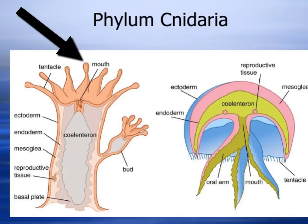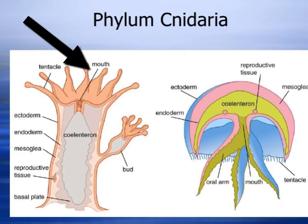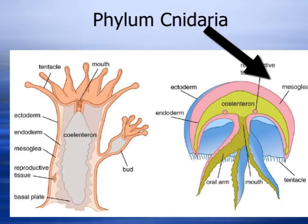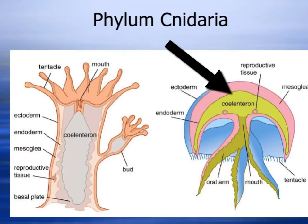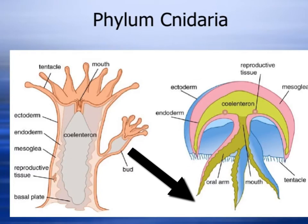This group has two basic forms. The first form is the polyp — it's upright, it's attached, and it's got its tentacles at the top. The second form is the medusa, which is the swimming form. It's really kind of a polyp upside down, with its tentacles down below and oral arms, and it floats around in the water column.